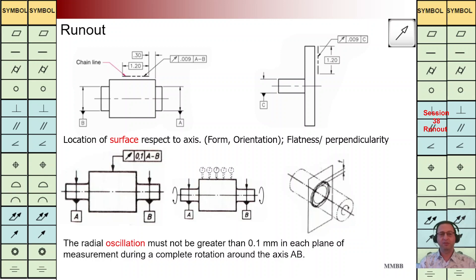Hello everybody, good to see you today. We're going to talk about run out. At top left we have this symbol — run out, tz is 0.009, back to A-B axis. We are going to control the location of the surface for this part of this cylinder, back to axis A-B again, at top right.